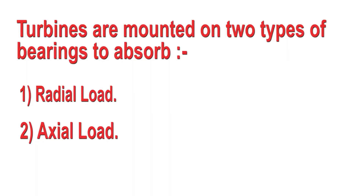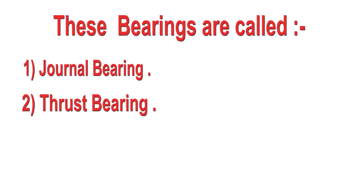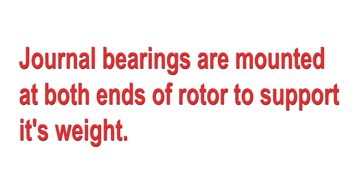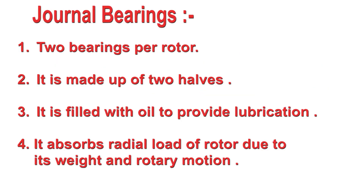Since the turbine is a huge rotating body, it is mounted on two types of bearings to absorb radial and axial loads caused by its rotation. These bearings are called journal bearings and thrust bearings. Journal bearings are mounted at both ends of the rotor to support its weight.